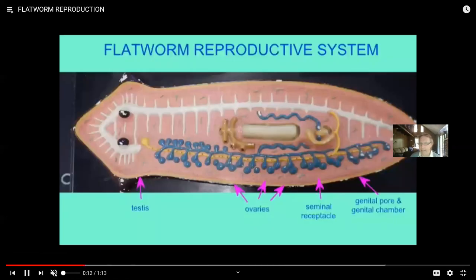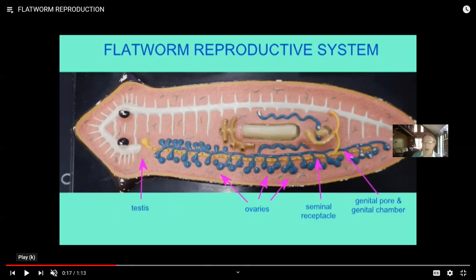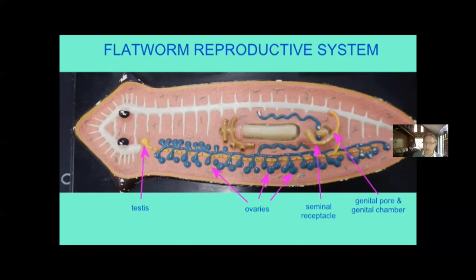How do flatworms reproduce? There are variations. Typically, individuals are hermaphroditic — they make both ovaries and testes. Some individuals could potentially fertilize themselves, but there are ways of preventing that: one could be self-sterile or produce sperm at different time periods. The testes produce sperm which can be transferred to a mating partner, and an individual can take up sperm from a partner and store it in a seminal receptacle.